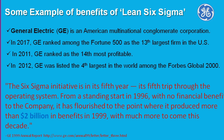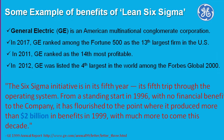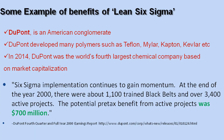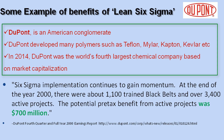Now let's see some examples of benefits from companies practicing Lean Six Sigma. The first example is from GE, a very big multinational company. They started their Six Sigma journey in 1996. Initially they didn't have any financial benefits, but as the initiative matured, by the year 1999 they got tangible gains of two billion dollars.